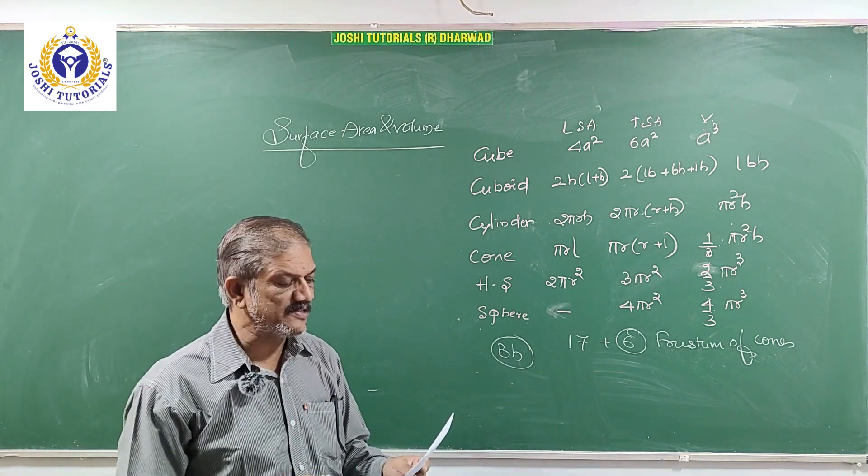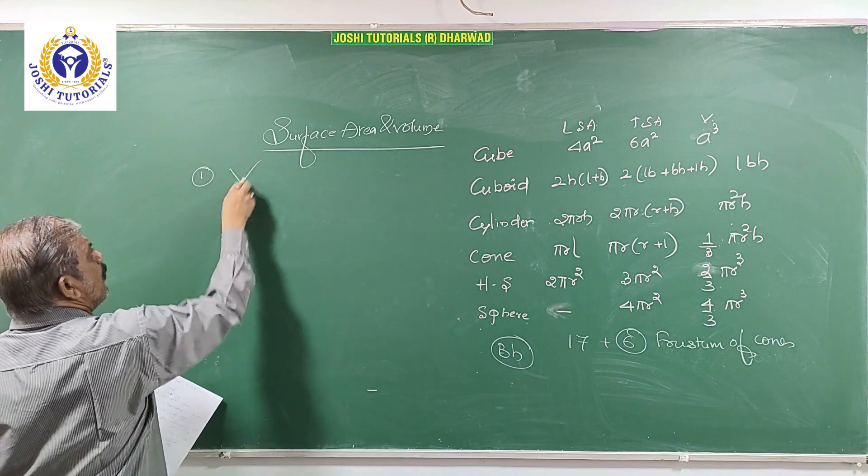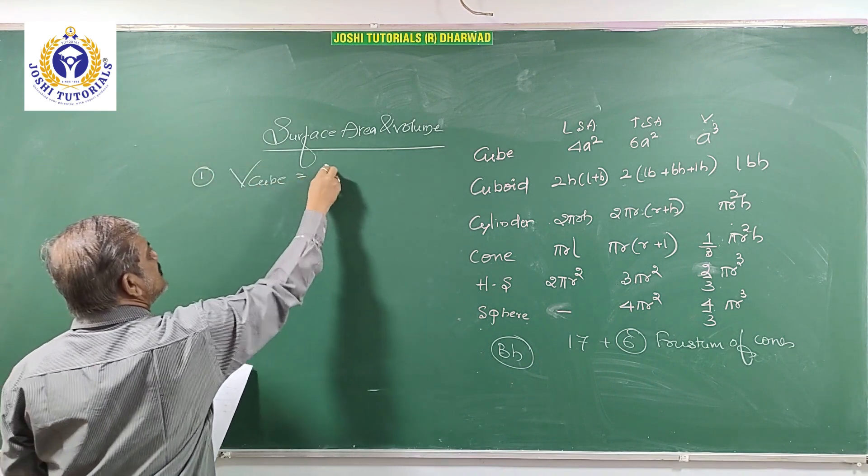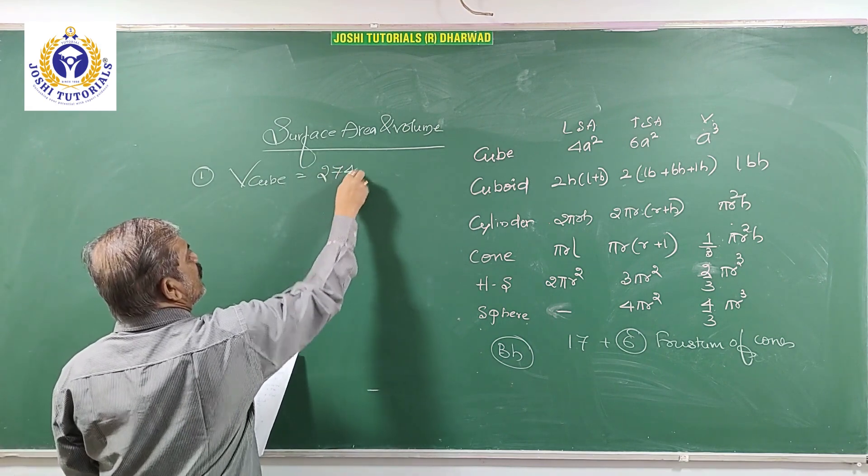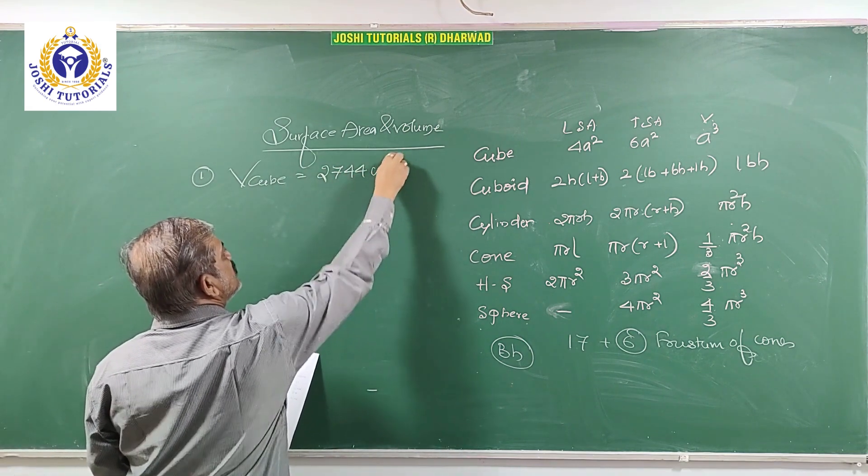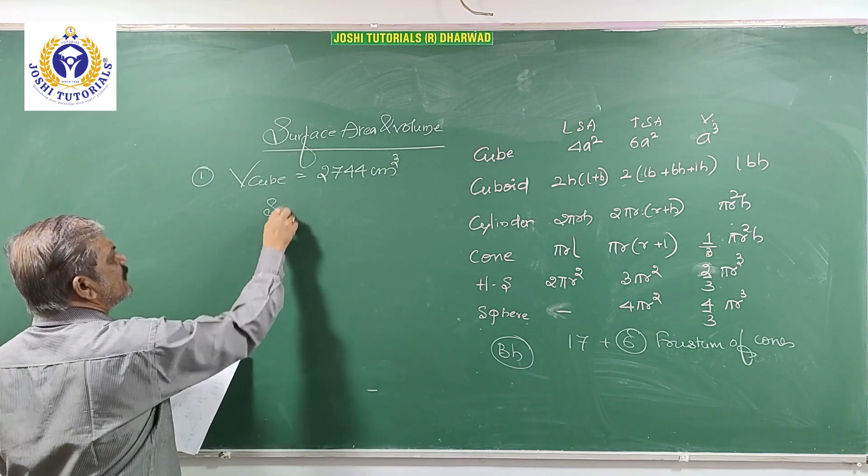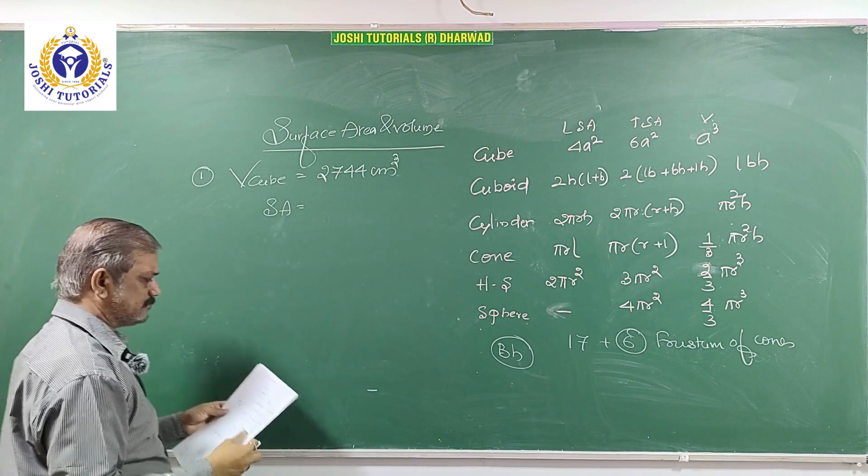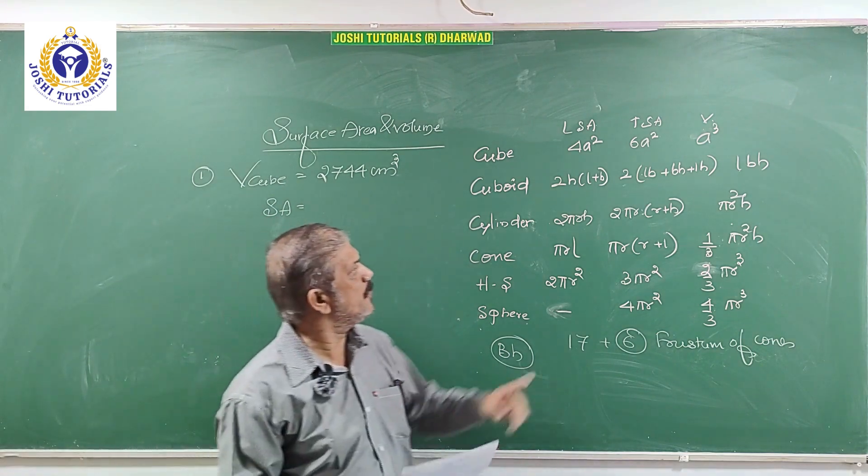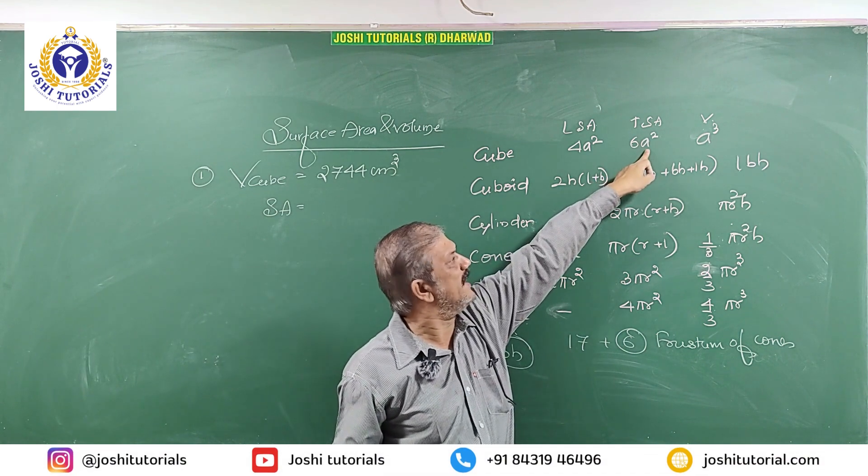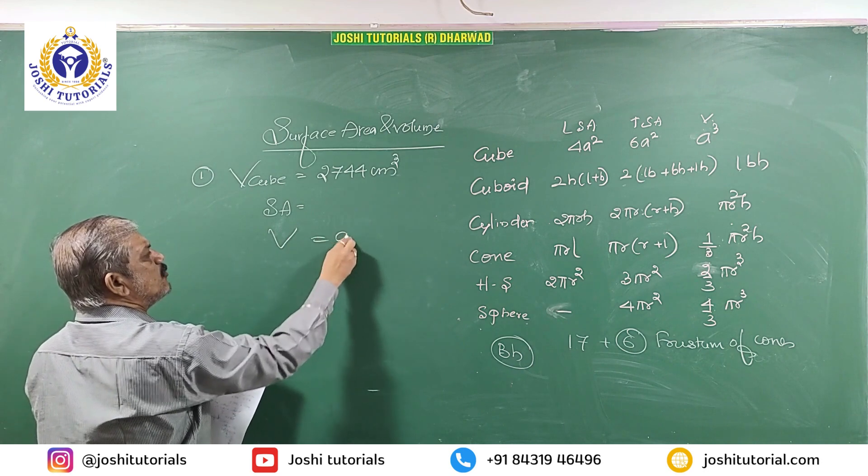Out of syllabus. Volume of cube is given. First problem: volume of cube is given as 2744 centimeter cube. Then, what is its surface area? To find the surface area, we want side, you know A. So volume is A cube.